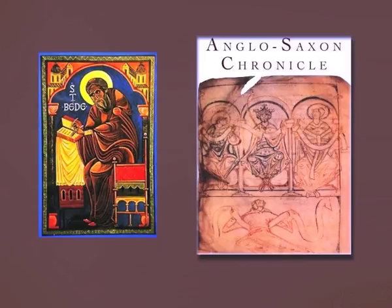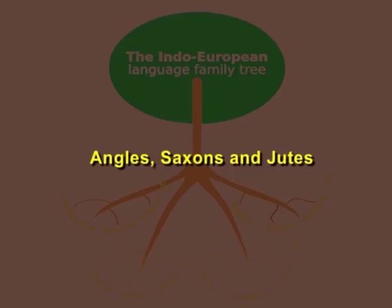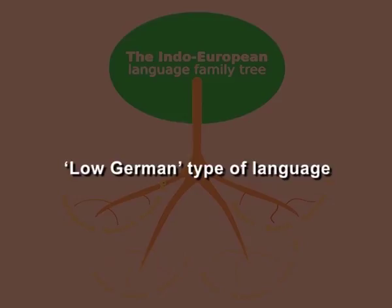According to Bede and the Anglo-Saxon Chronicle, the tribes which came to settle and overrun most of Romanized Britain in the fifth and sixth centuries were from parts of northern Germany. They were the Angles, Saxons, and Jutes. These migrants brought with them a Low German type of language — one which was transplanted to England too early to be affected by the High German change of consonants which has made the distinction between the speakers of High German and those of Low German.